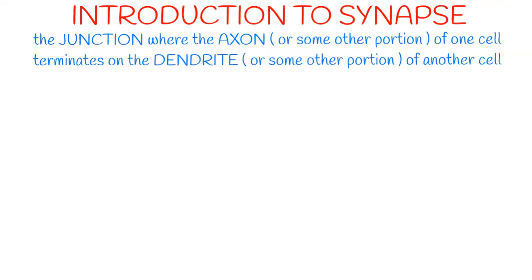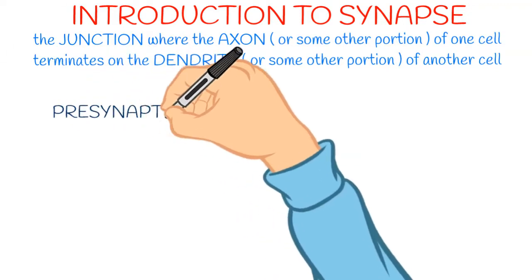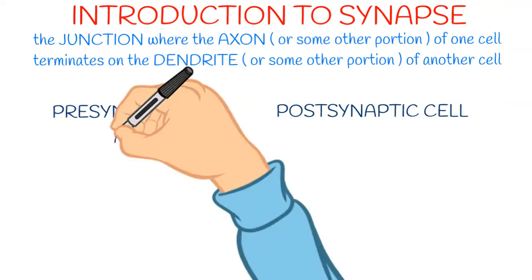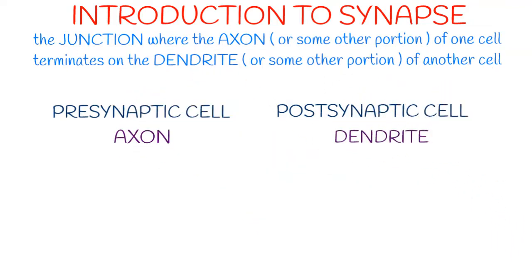But other portions can also be used. Let's understand that first. In a junction, two cells are included: pre-synaptic and post-synaptic cells. Commonly, the pre-synaptic cell is the axon and post-synaptic is the dendrite, but in some types, instead of axon and dendrites, some other structure can also form the synapse.